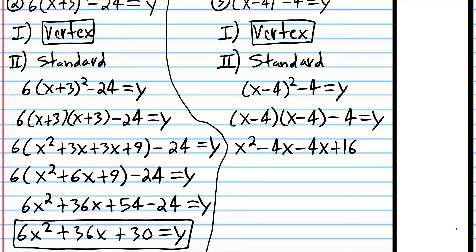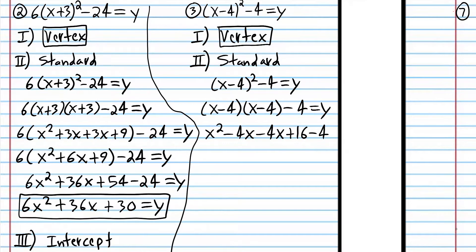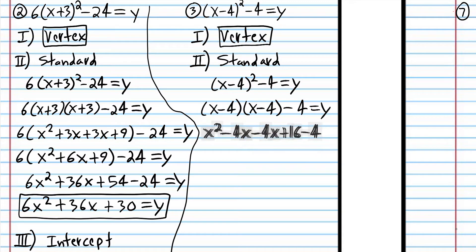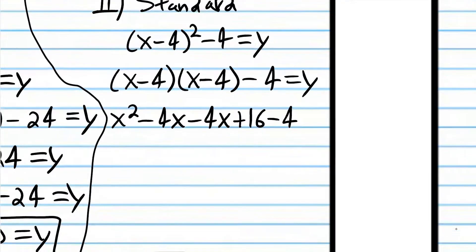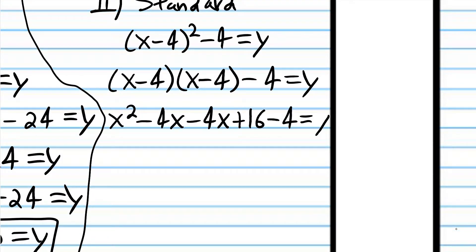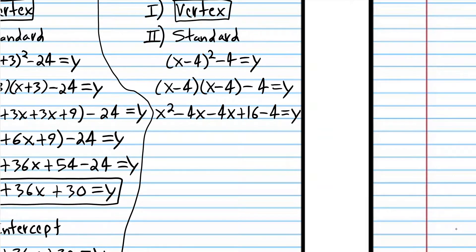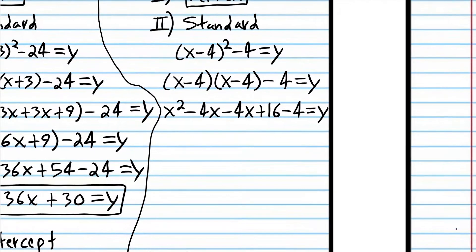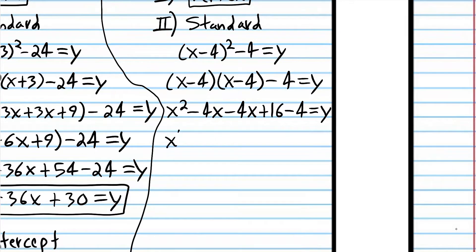You can remember that algorithm using the acronym FOIL — something you've done many times in this curriculum. Now we can combine the like terms: negative 4x plus negative 4x is negative 8x, and 16 minus 4 is 12. So now we have standard form.